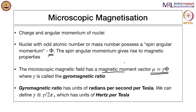The gyromagnetic ratio has units of radians per second per Tesla. Sometimes you will also see the notation gamma-bar, which is gamma divided by 2-pi. I am going to use gamma and gamma-bar interchangeably, but wherever required, I will try to mention that. This class is just to understand at a qualitative level how MR images are produced and also understand the mechanisms of contrast.